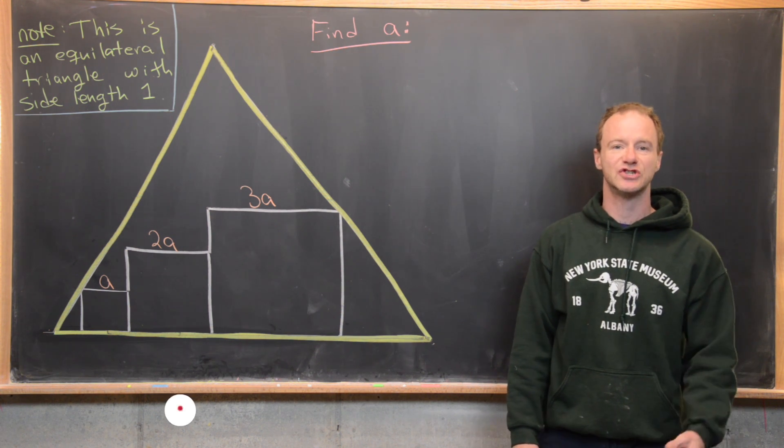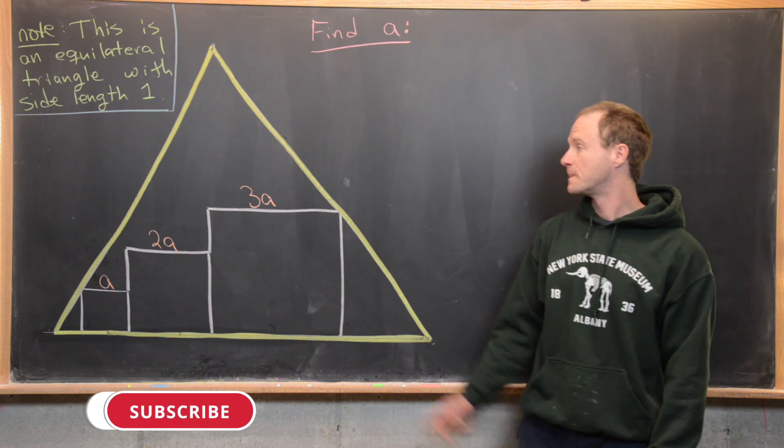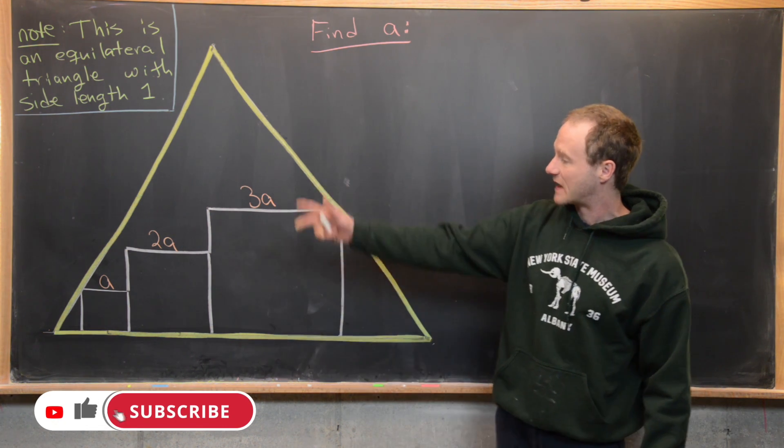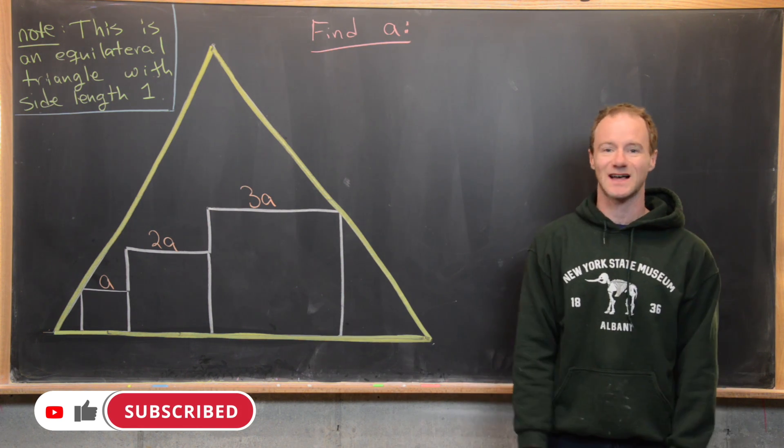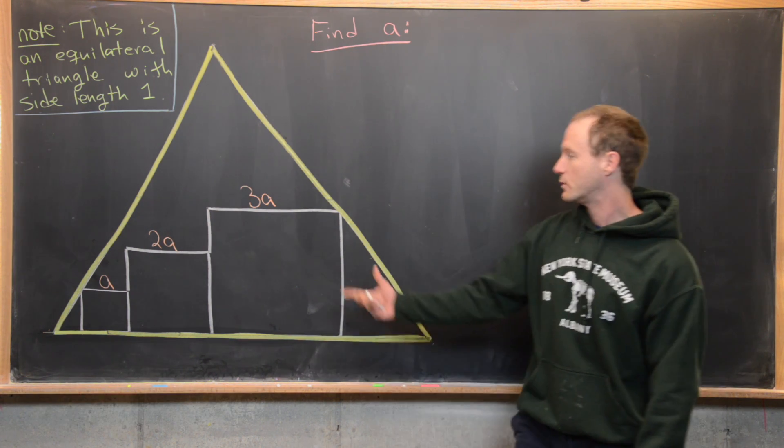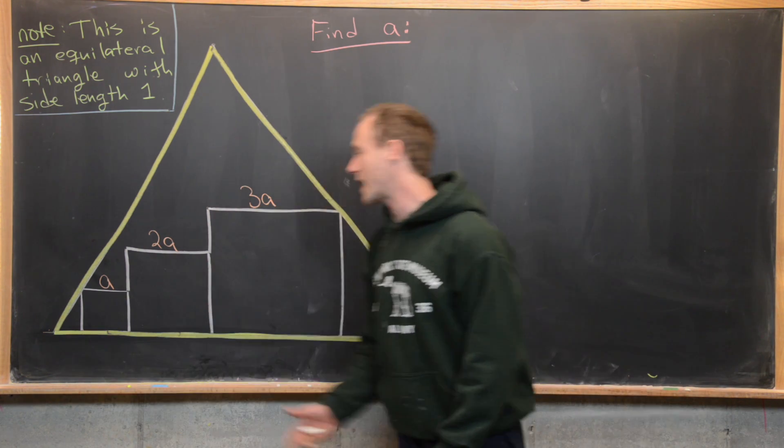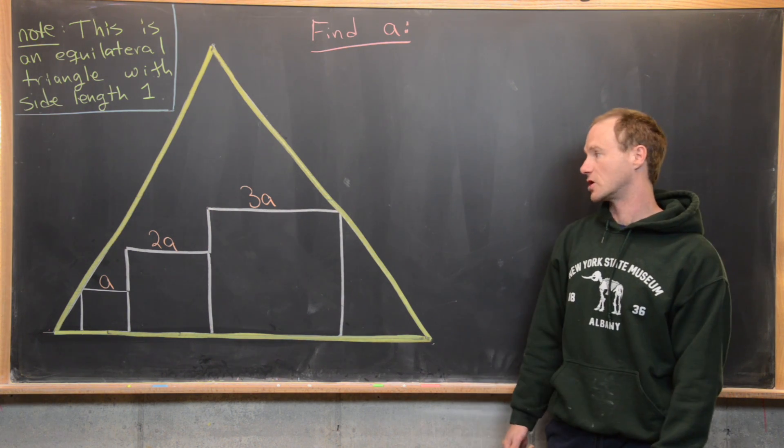Here we're going to look at a solution to a nice geometry problem that I came up with. So the setup is that we have an equilateral triangle with side length 1 and then we have these three squares inside the equilateral triangle.